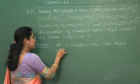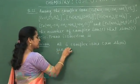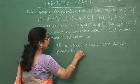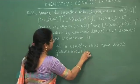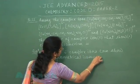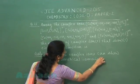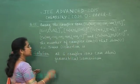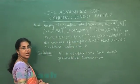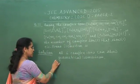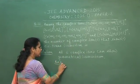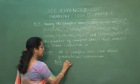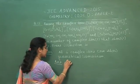Geometrical isomerism is also known as cis-trans isomerism. So the answer to this question should be six.